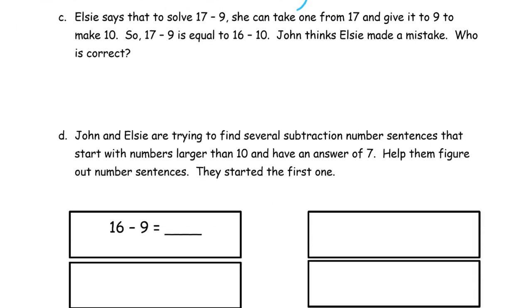Elsie says that to solve 17 minus 9, she can take 1 from the 17 and give it to 9 to make 10. So 17 minus 9 is equal to 16 minus 10. John thinks Elsie made a mistake. Who is correct? This problem is a puzzle because she says she can take 1 from the 17 and give it to the 9 to make 10. But she also says 17 minus 9 is equal to 16 minus 10. So I can test that — let's solve both and see if they are the same.